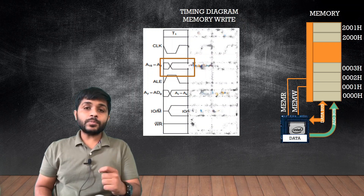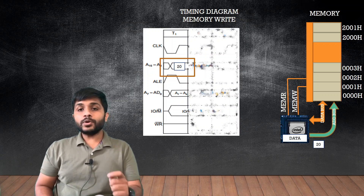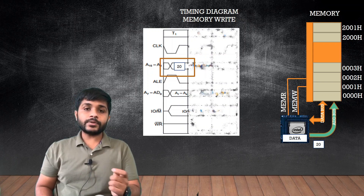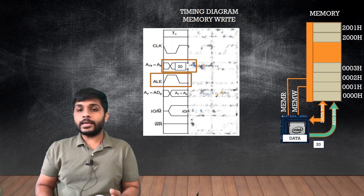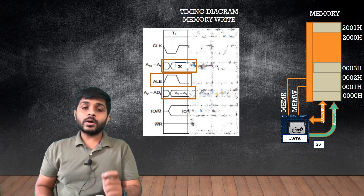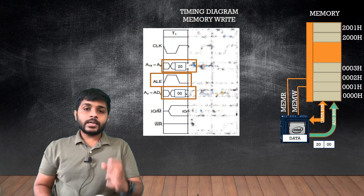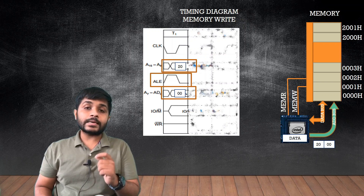You can see that the processor puts the higher-order address 20 on A8 to A15. To put 00 on AD0 to AD7, the bus must first be converted into A0 to A7, and for that the processor uses ALE. When ALE is asserted, AD0 to AD7 is treated as A0 to A7, and the processor puts the lower address 00 there. So the processor has successfully put the address value 2000h on the address bus and memory has received the address 2000h.